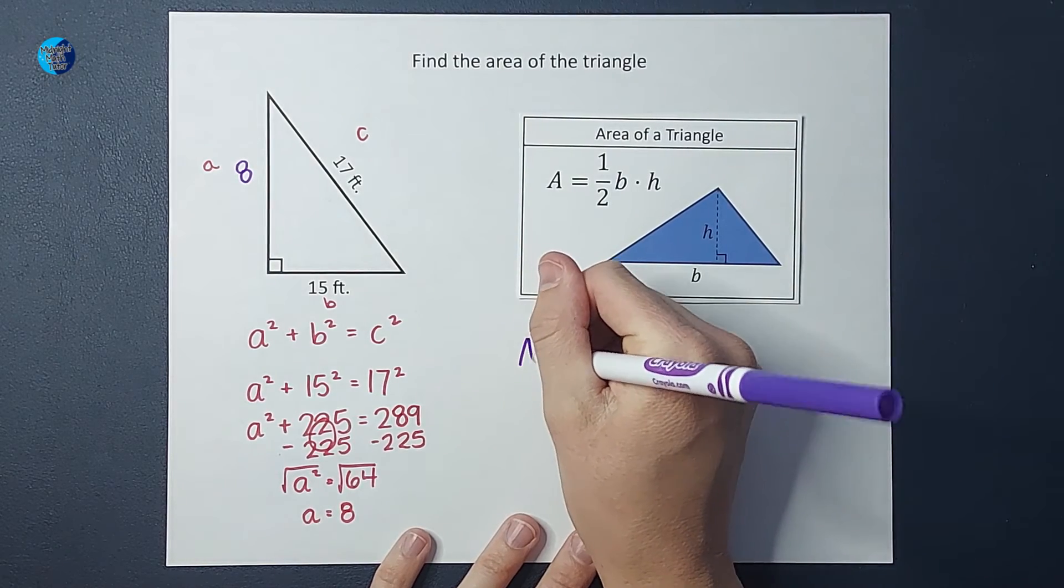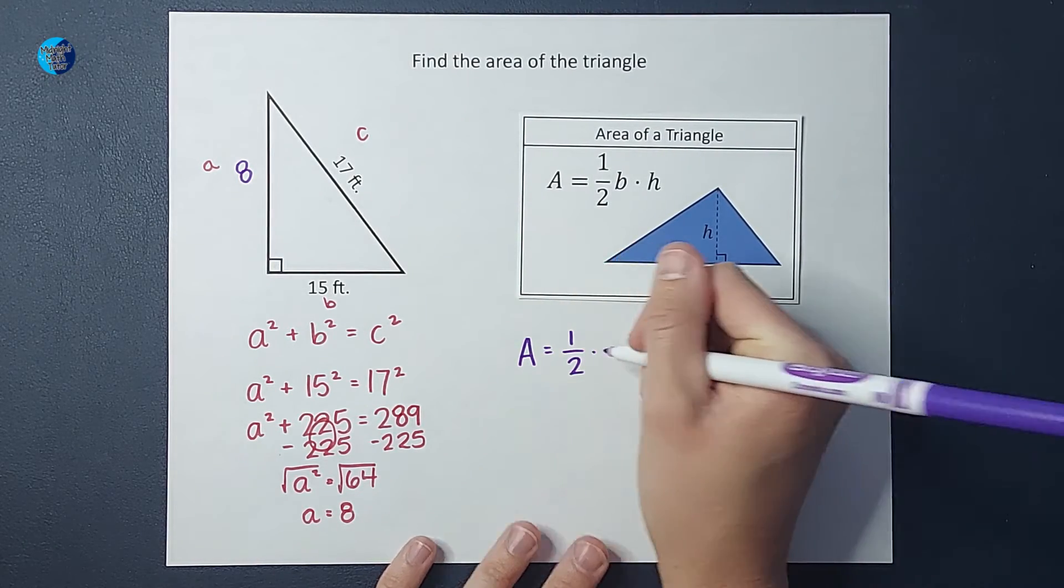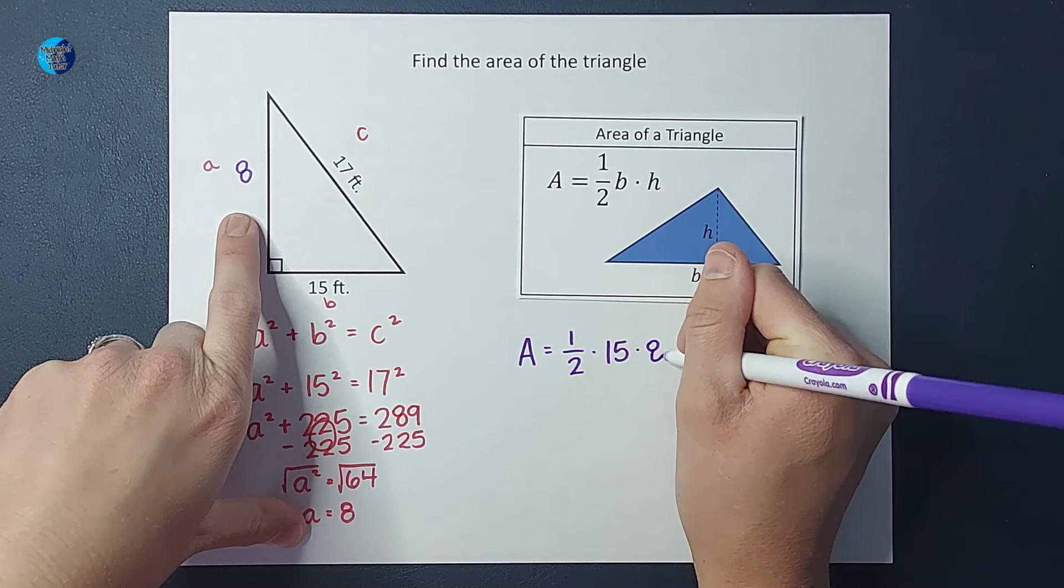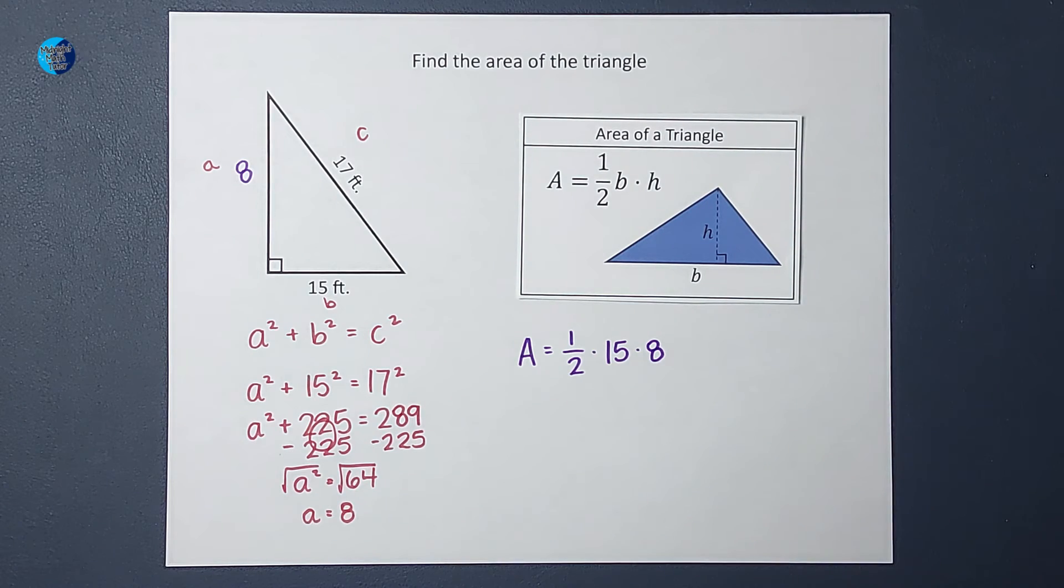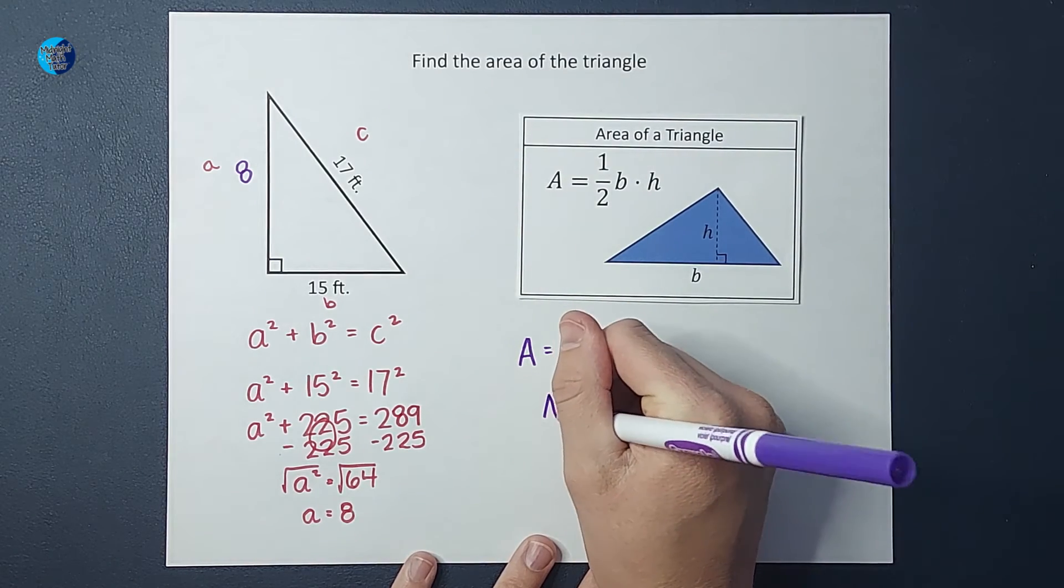So the area equals half times the base, so 15, times the height, which is 8. Okay, when I multiply those all together, 1 half times 15 times 8, I end up with 60.